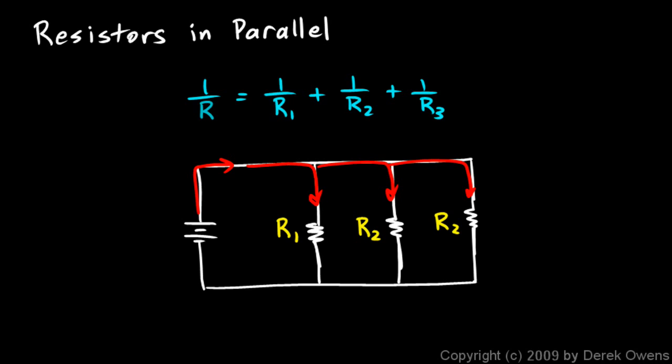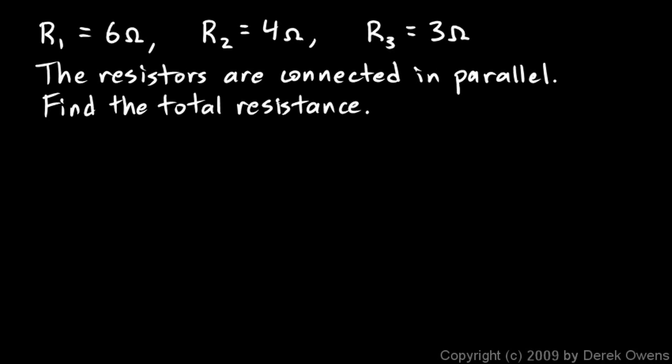Now we're going to work an example problem. We're told that resistor 1 is 6 ohms, resistor 2 is 4 ohms, and resistor 3 is 3 ohms, and they're all connected in parallel. We want to find the total resistance, and we'll do that with this formula: 1/R = 1/R1 + 1/R2 + 1/R3.